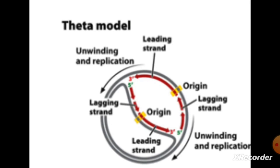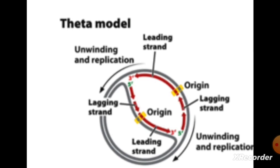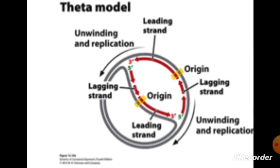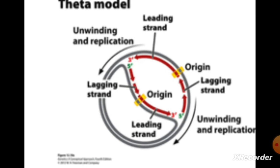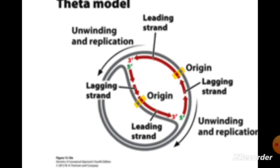In theta replication, E. coli and other prokaryotes have circular DNA. In this replication, molecules assume the shape of theta. DNA of plasmids, phages, and viruses also have circular DNA. In eukaryotes as well, mitochondrial DNA and chloroplast DNA are circular. Theta replication is found in E. coli and plasmids like ColE1, pSE, pSE101, R6K, and F plasmid.